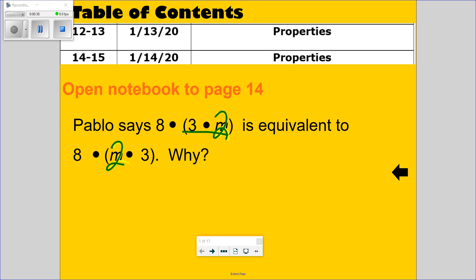What is 3 times 2? 6. 8 times 6. What's 2 times 3? 6. 8 times 6.